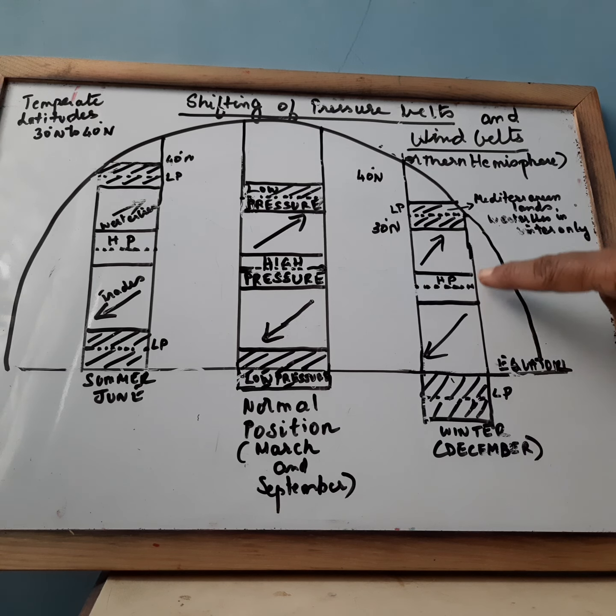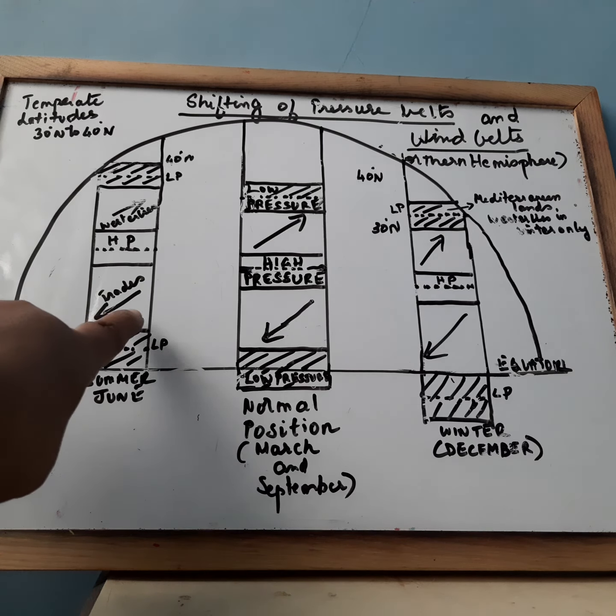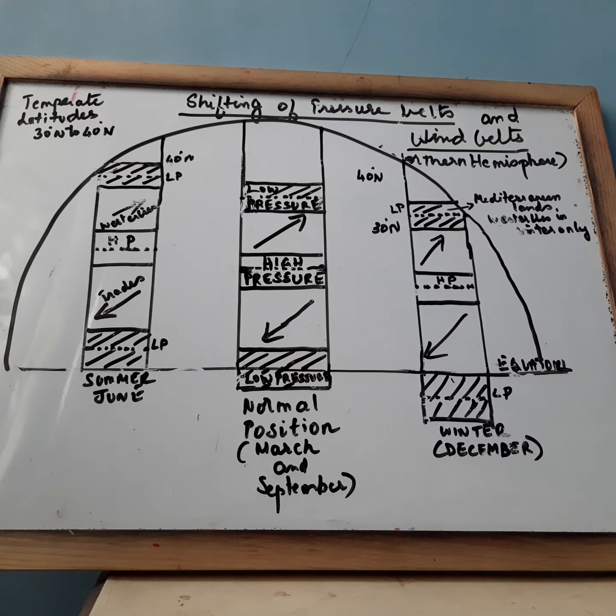You find low pressure, high pressure, low pressure pattern repeating in different positions, and you find trade winds and westerlies. Here you find the westerlies blowing and bringing rainfall to the Mediterranean region which lie here.